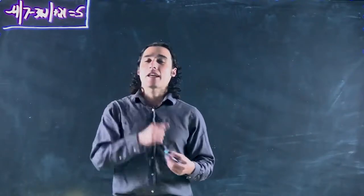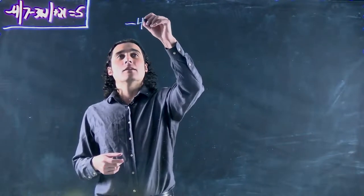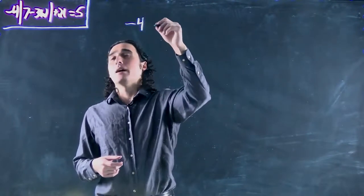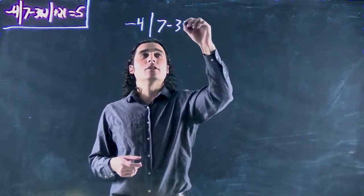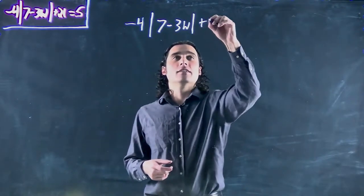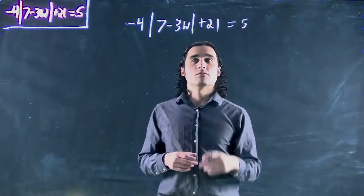Hello again! Still looking at absolute values. We've got -4 being multiplied by an absolute value that has 7 - 3w in it, and then we're adding 21, and that whole entire mass is equal to 5.